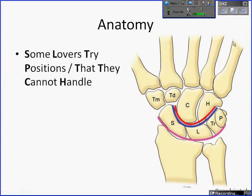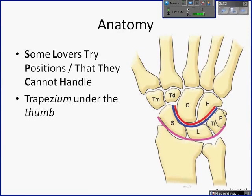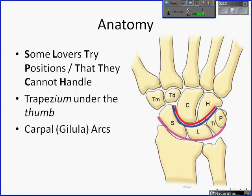There's a mnemonic I found helpful to remember the bones of the wrist. Another rhyme useful to remember the trapezium versus the trapezoid: the trapezium is under the thumb. It's important to always examine the carpal arcs, also known as the Gilula arcs, named after the person who described them. There are three arcs: the proximal arc outlines the proximal aspect of the first carpal row; the second arc outlines the distal aspect of the first carpal row — note the pisiform is not included; and the third arc outlines the proximal aspect of the capitate and hamate.